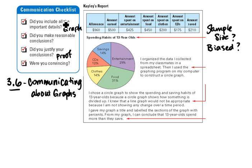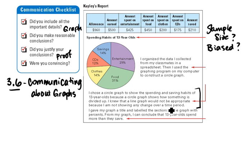She used a spreadsheet program to create a table and then a pie chart. She chose a circle graph to show the spending and saving habits of 13-year-olds because a circle graph shows how something is divided up. She knew a line graph would not be appropriate since she's not showing trends or change over a time period. She didn't want to use a bar graph, histogram, or pictograph, but she doesn't state why.